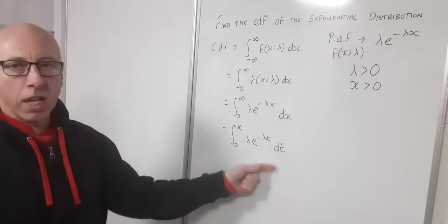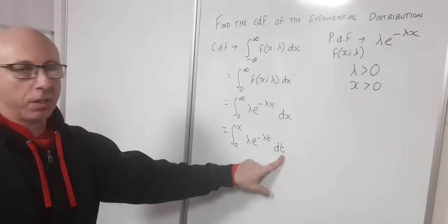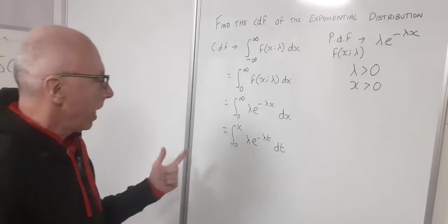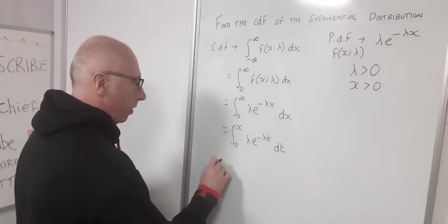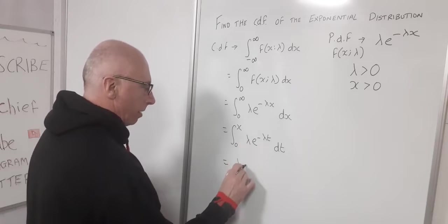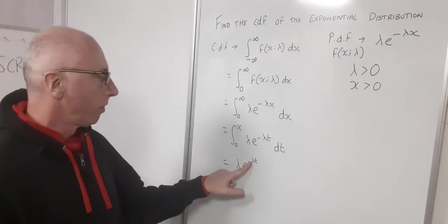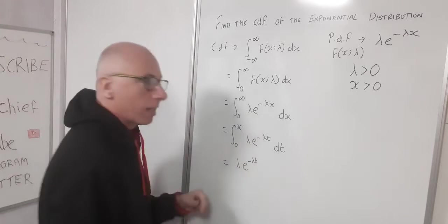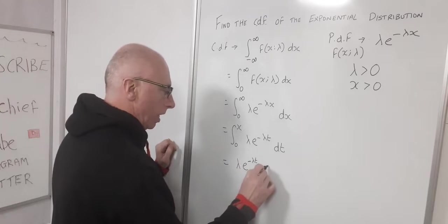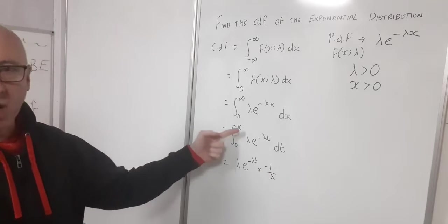Now this function here is pretty straightforward to integrate. We've got lambda, which is not part of t, and we've got negative lambda t in our exponential. So if we just integrate straight off, we would get lambda e to the negative lambda t. And then by the reverse chain rule, we would divide by negative lambda, so we multiply this by minus one over lambda. And then that's over zero to x.